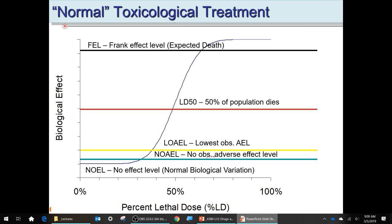If you're below these levels, you won't see death. You start to see effects in super-sensitive individuals at the lowest observed effect level, which is around 45% of the percent lethal dose. At 50% lethal dose — the LD50 — it's expected that 50% of the population exposed to that level will die.